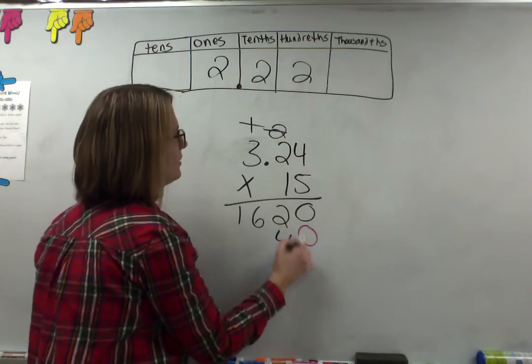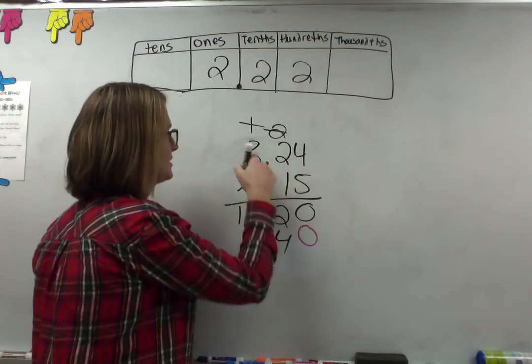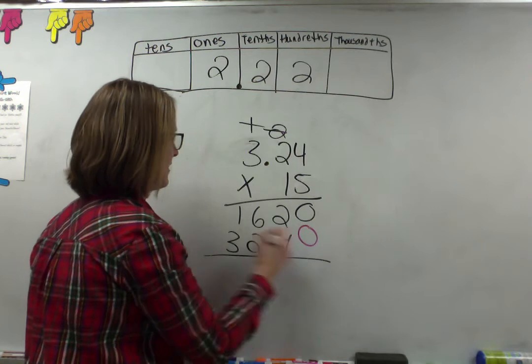Then I can multiply 1 times everything. So 1 times 4 is 4, 1 times 2 is 2, 1 times 3 is 3. Now I add them together.